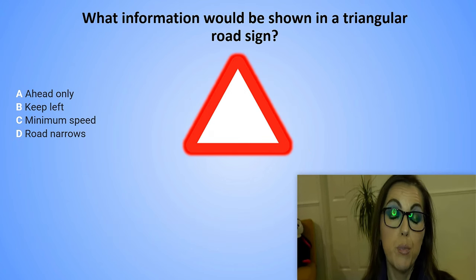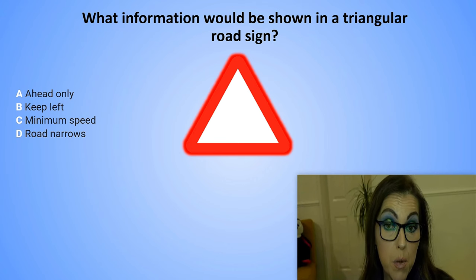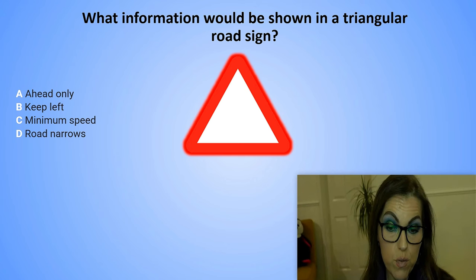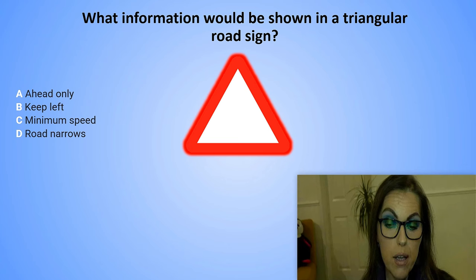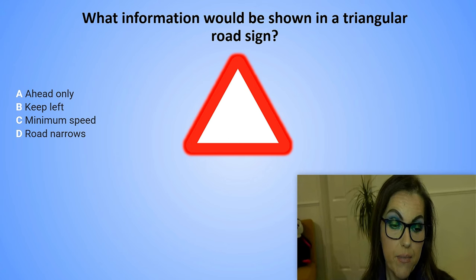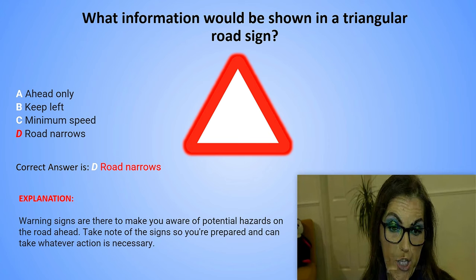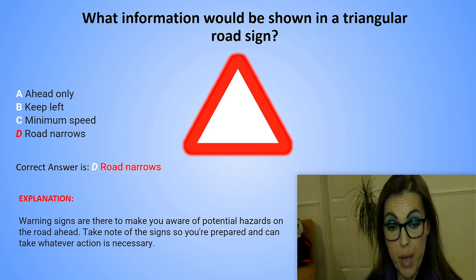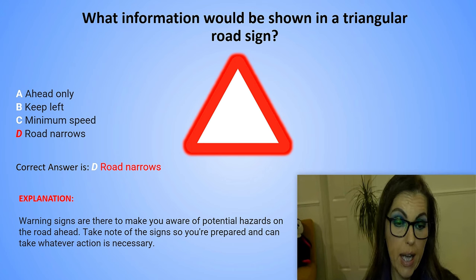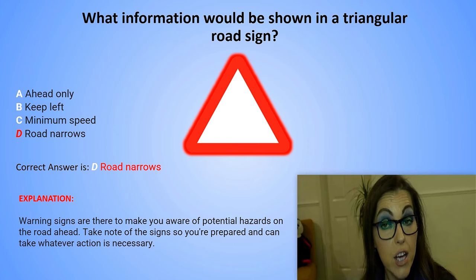What information would be shown in a triangular road sign? A. Ahead only. B. Keep left. C. Minimum speed. Or D. Road narrows. The correct answer is D. Road narrows. Explanation: Warning signs are there to make you aware of potential hazards on the road ahead. Take note of the signs so you are prepared and can take whatever action is necessary.